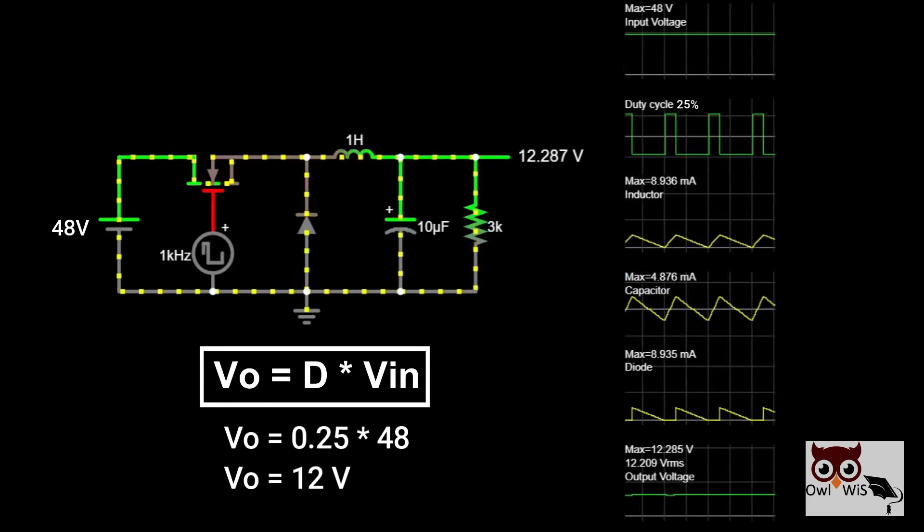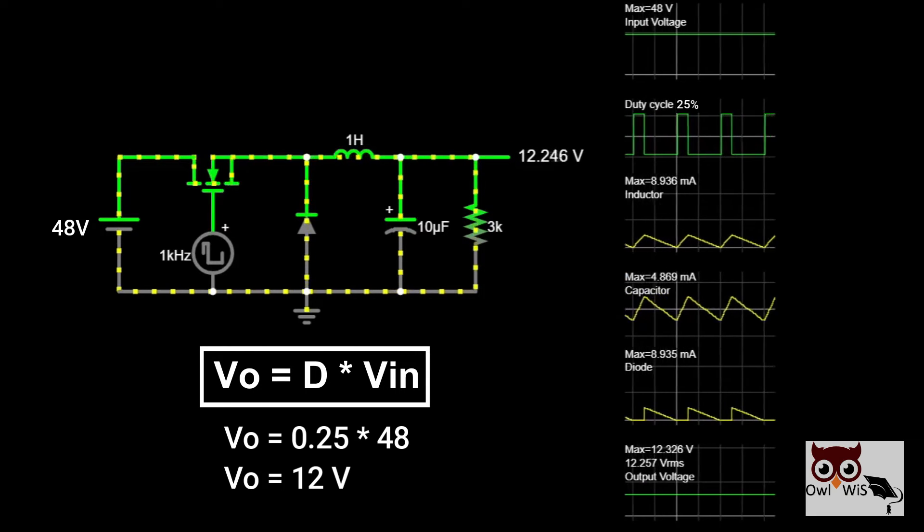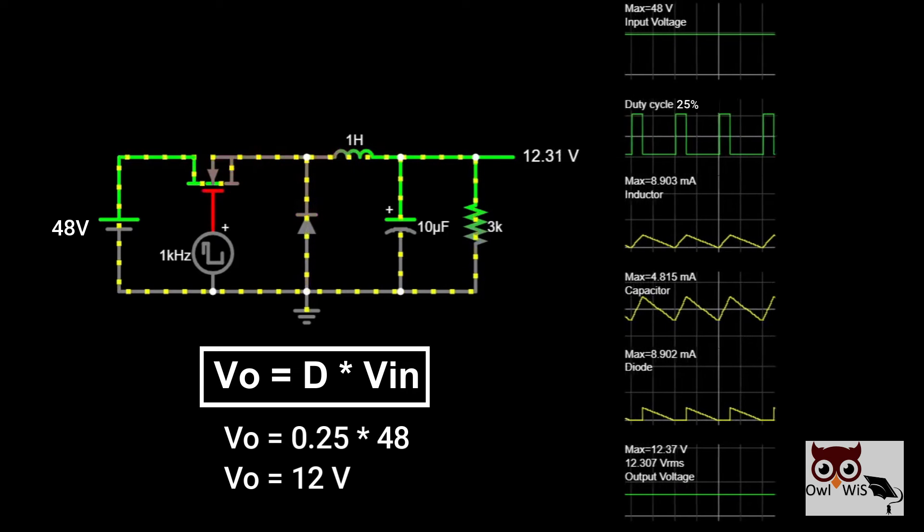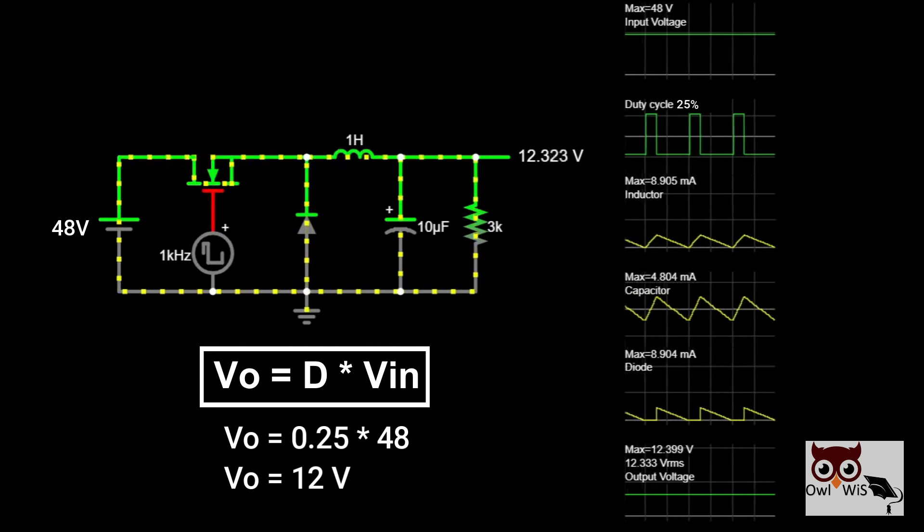For example, if you are using an input voltage of 48V with a duty cycle of 25%, then the output voltage will be equal to 12V.